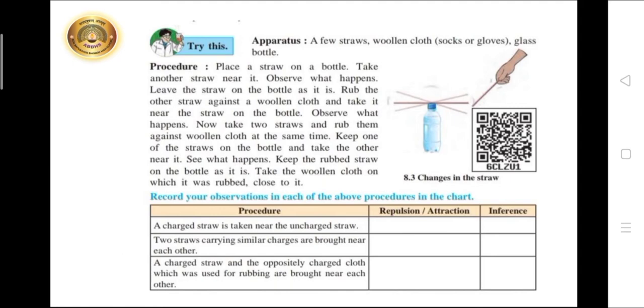A charged straw is taken near the uncharged straw. Then there will be attraction. And inference is electrically charged objects attract uncharged objects.